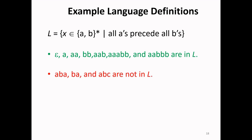Consider some more strings: ABA, BA, and ABC. Do they belong to this language? No. In ABA, this A is preceded by B but the other A is not preceded by B, so this string does not belong to this language. Similarly, in BA, this A is not preceded by B, so it does not belong. Next, ABC does not belong because C is not present in the alphabet.